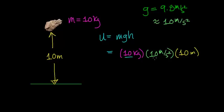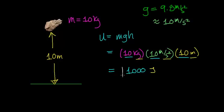When we multiply 10 by 10, we get 100, and 100 times another 10 works out to be 1,000. A kilogram times a meter per second squared times a meter works out to be a unit of a joule. So this rock has a total energy of 1,000 joules.